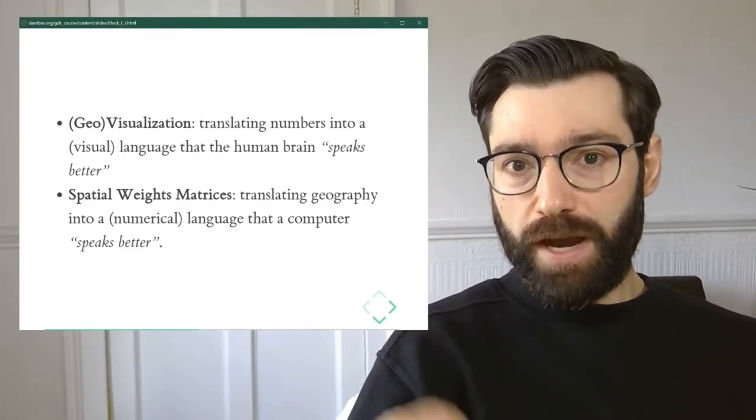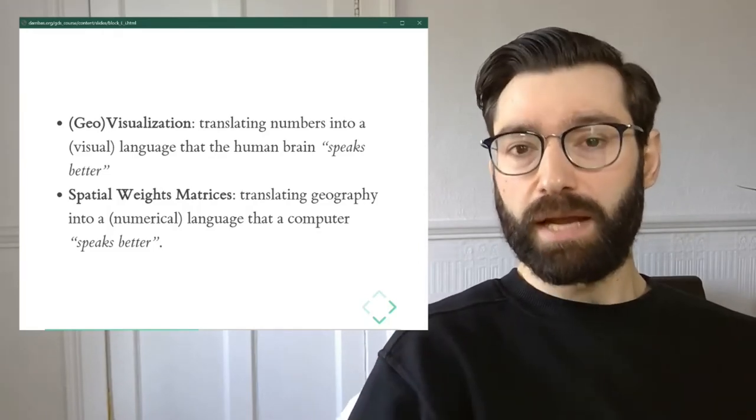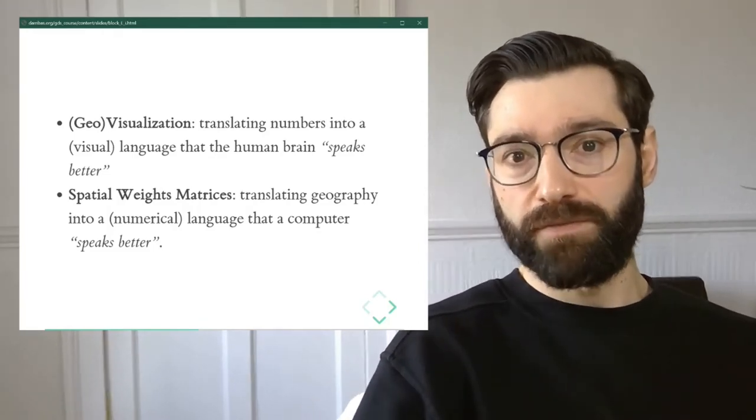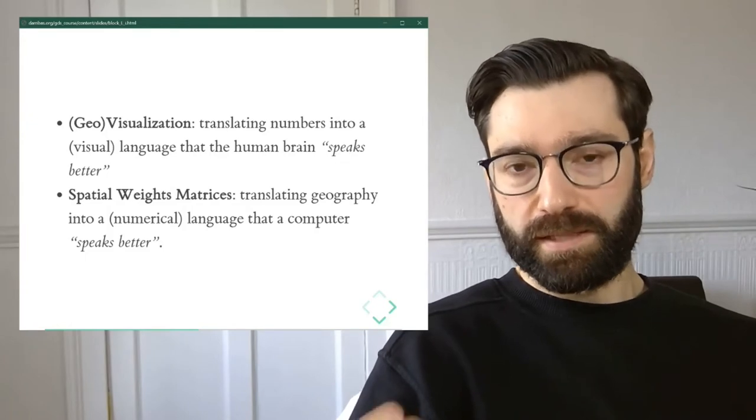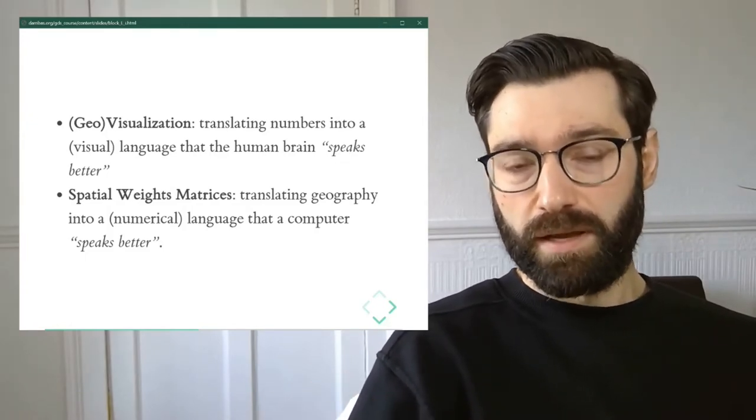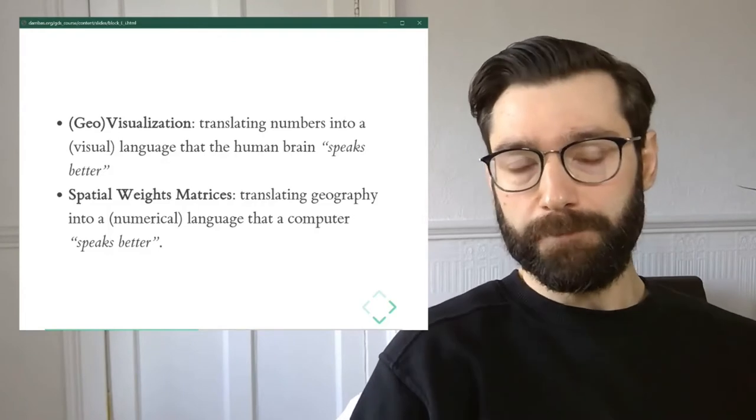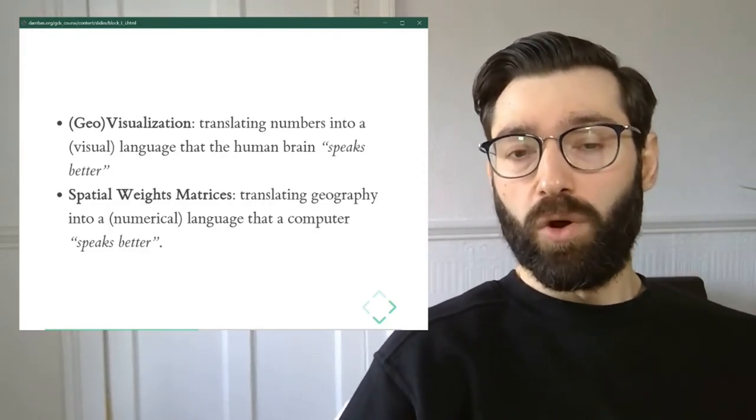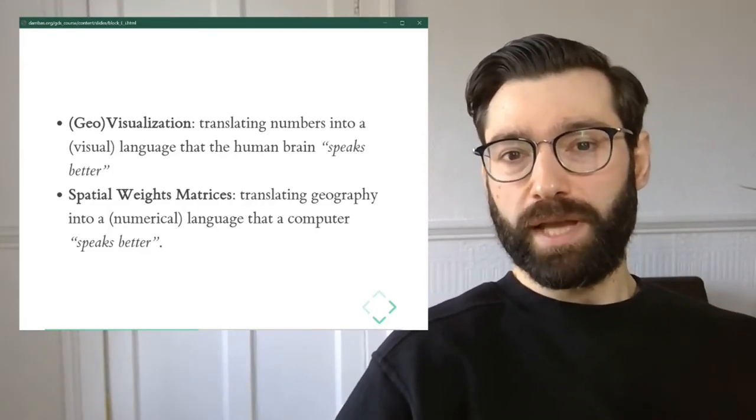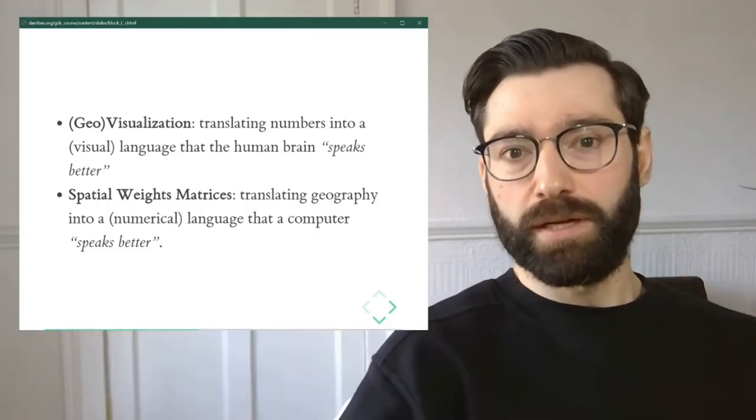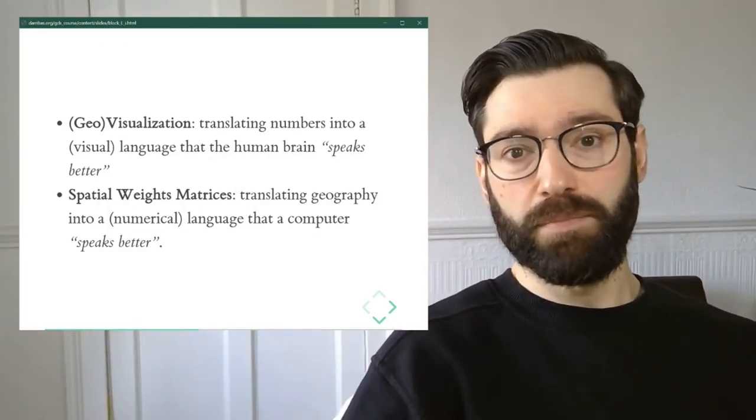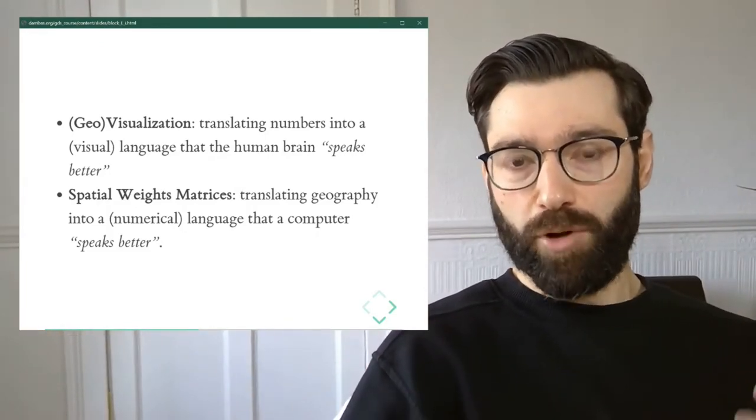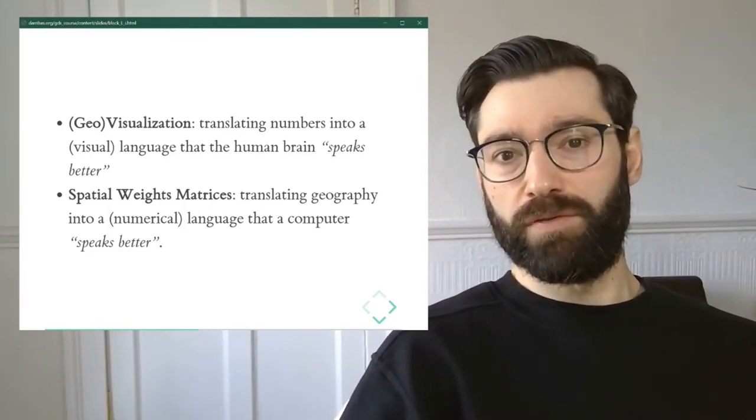This is a form that is very well understood by computers and is very well understood by statistics. In fact, most of the statistics that we're going to see are based on matrix manipulation and algebra. This means that we're taking geography, converting it into a matrix, and then for statistics it can be processed and manipulated in the same way as any other type of data.